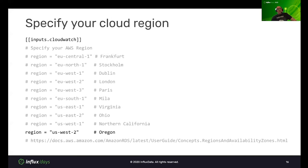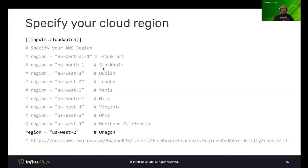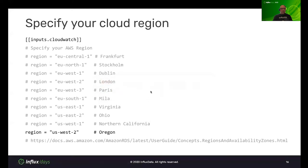Next, list that you're running the CloudWatch plugin using double bracket inputs.cloudwatch. Then specify your AWS region — region equals the AWS region you prefer, in this case US West 2. You can see other popular regions in Europe and North America, and find all of these on AWS's documentation page.